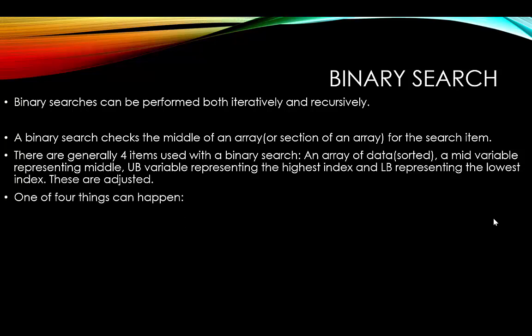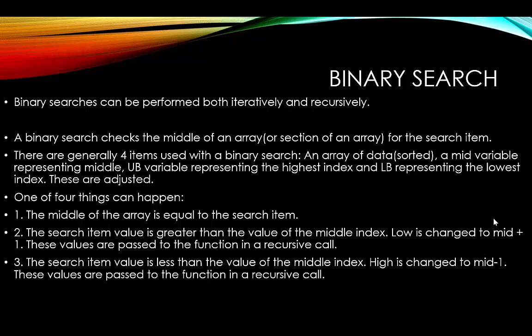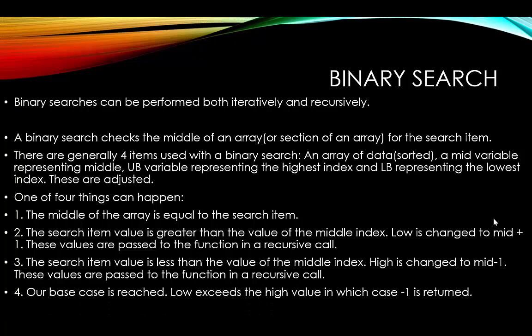These variables are going to be adjusted. One of four things can happen: the middle of the array equals the search item — that's the base case and we exit the recursion; the search item is greater than the middle value, so we update low to mid plus one and pass it recursively; the search item is less than the middle value, so the upper bound is changed to mid minus one and passed recursively; or the item is not found — lower bound exceeds upper bound — and negative one is returned.